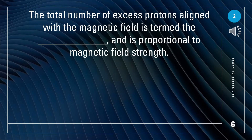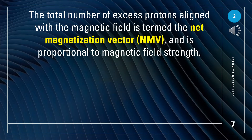The total number of excess protons aligned with the magnetic field is termed what, and it is proportional to magnetic field strength? It's called the Net Magnetization Vector, NMV.